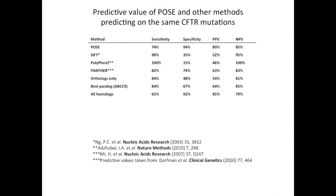Last, we wanted to see if using POSEs optimized to balance sensitivity and specificity could be used with other methods to also balance sensitivity and specificity in their predictions. We did that for both SIFT and PolyPhen, and indeed in both cases we see at least a slightly better balance of sensitivity and specificity relative to those methods using their native multiple sequence alignments for CFTR. This suggests that using POSEs could also be useful just to develop the multiple sequence alignment, which you can then use with existing scoring functions.